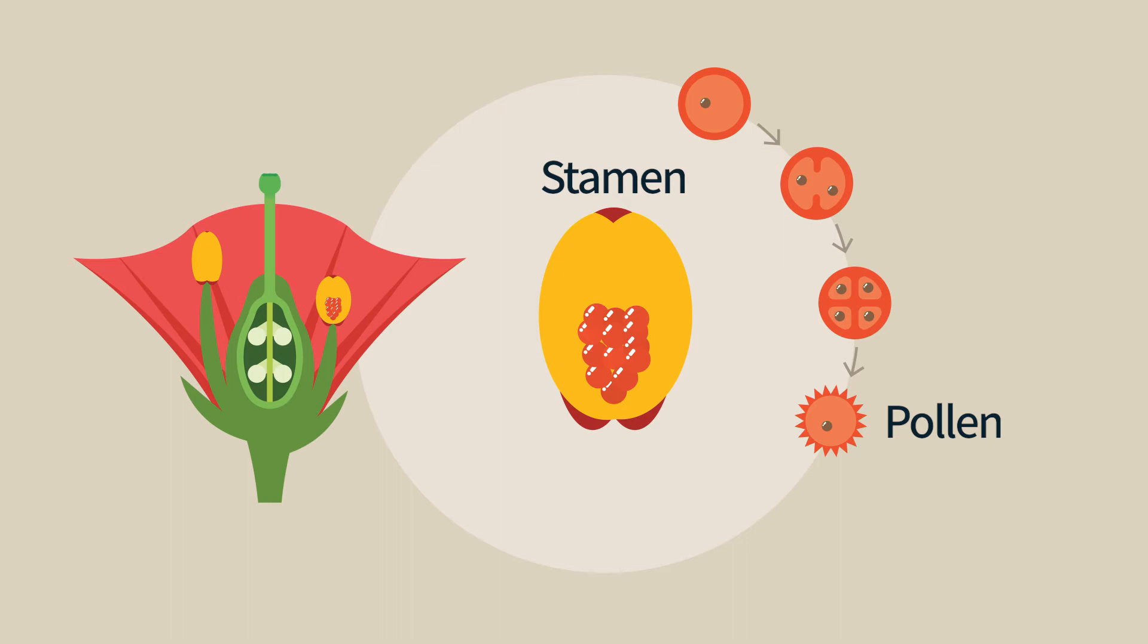In the next stage, the haploid cell in the pollen grain will divide mitotically into two cells, the generative cell and the vegetative cell.